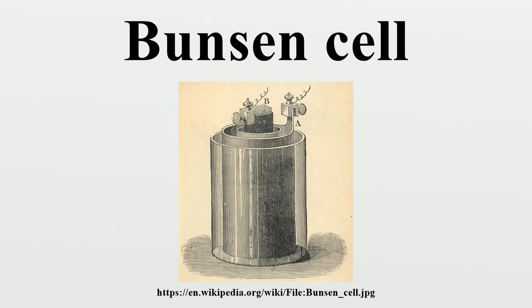The Bunsen cell is a zinc-carbon primary cell composed of zinc in dilute sulfuric acid, separated by a porous pot from a carbon cathode in nitric or chromic acid.